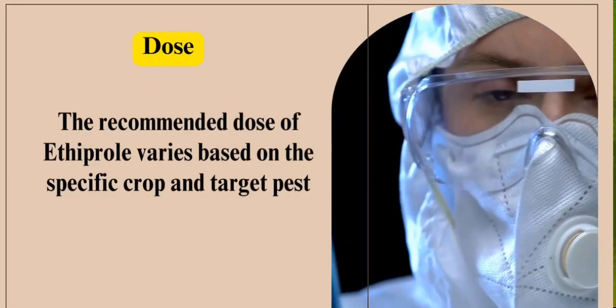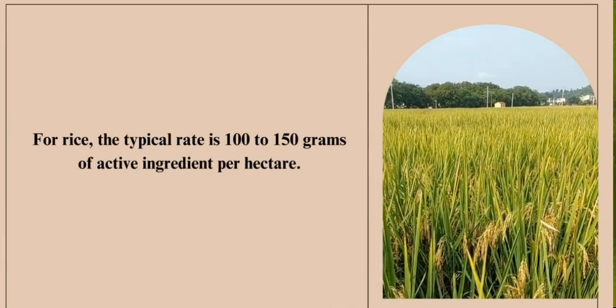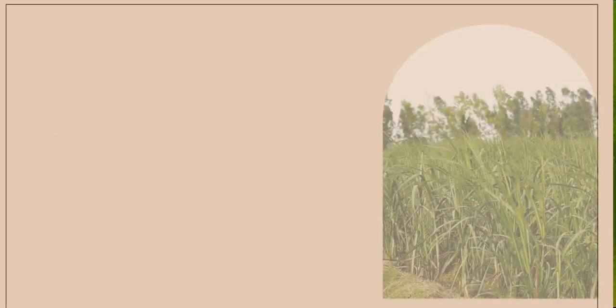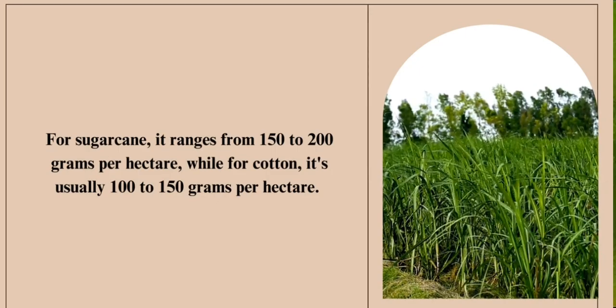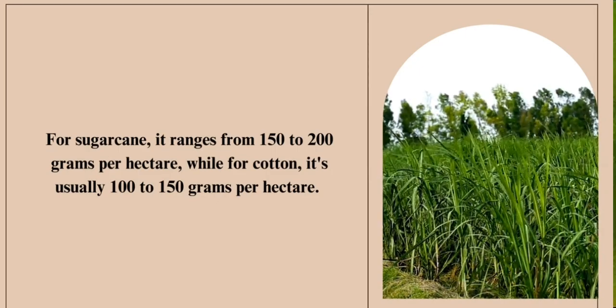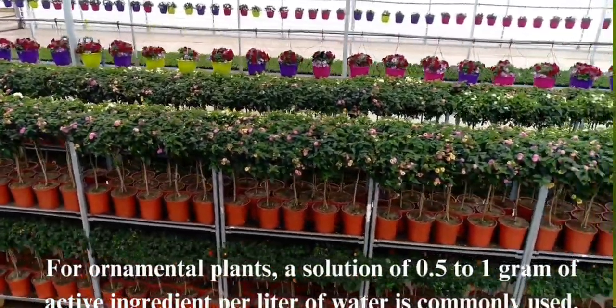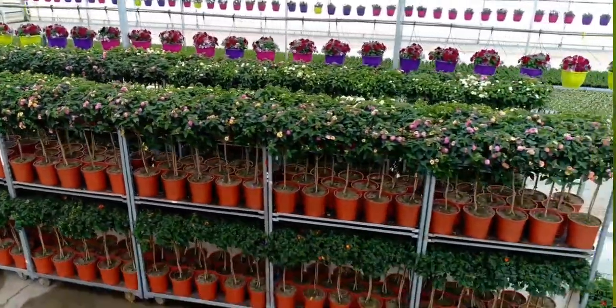Dose. The recommended dose of ethiprol varies based on the specific crop and target pest. For rice, the typical rate is 100 to 150 grams of active ingredient per hectare. For sugar cane, it ranges from 150 to 200 grams per hectare, while for cotton it's usually 100 to 150 grams per hectare. For ornamental plants, a solution of 0.5 to 1 gram of active ingredient per liter of water is commonly used. Always refer to the manufacturer's label for specific application rates and instructions, tailored to local regulations and pest pressures.